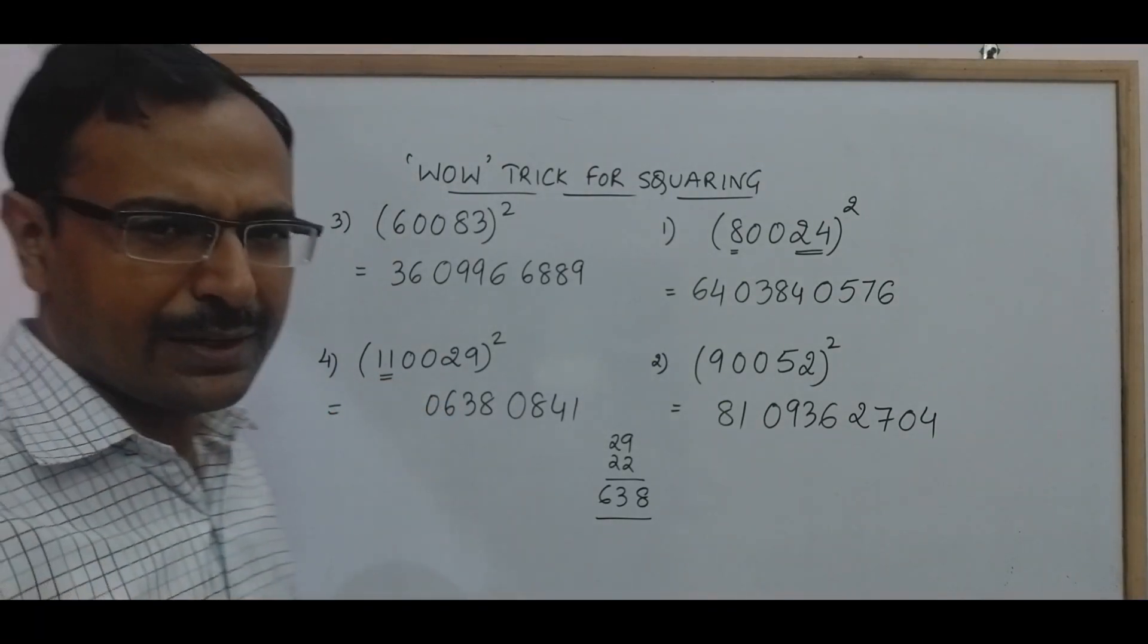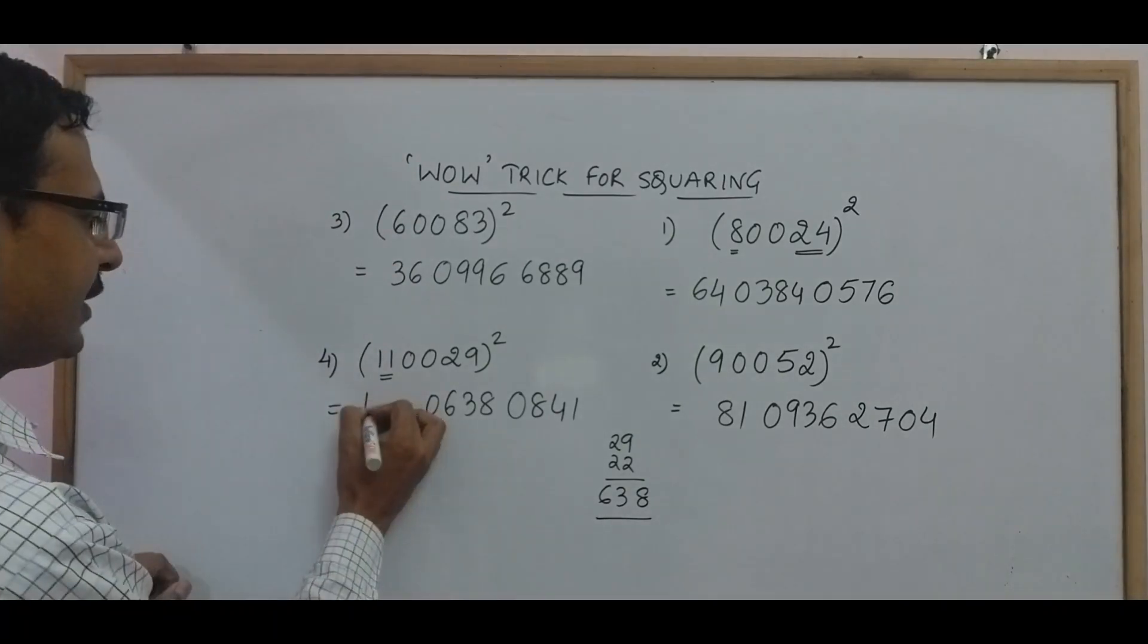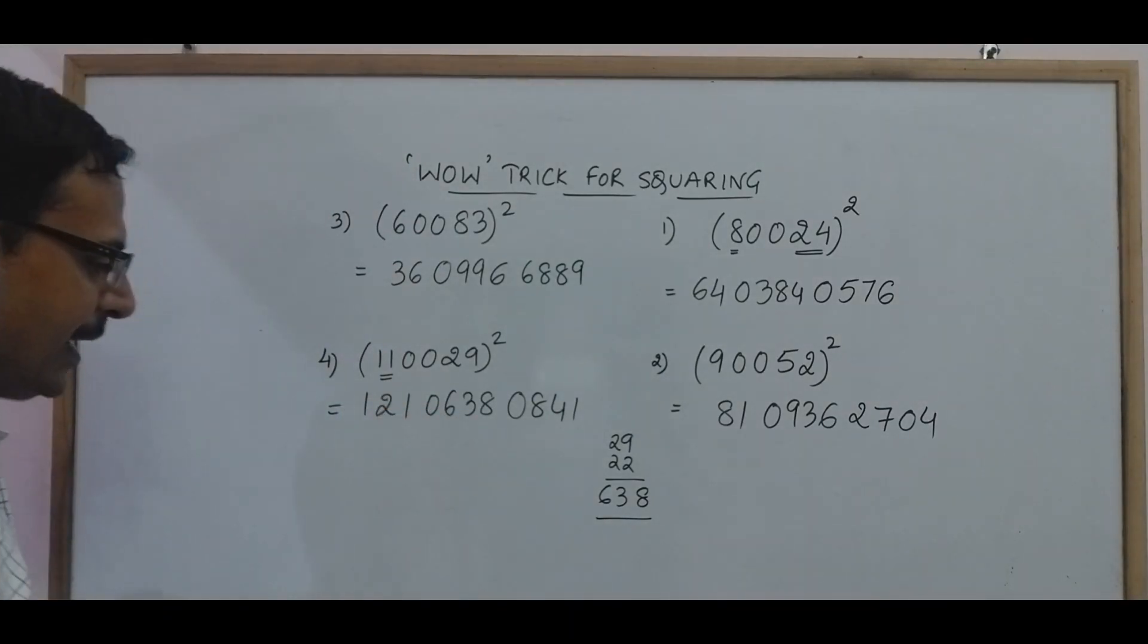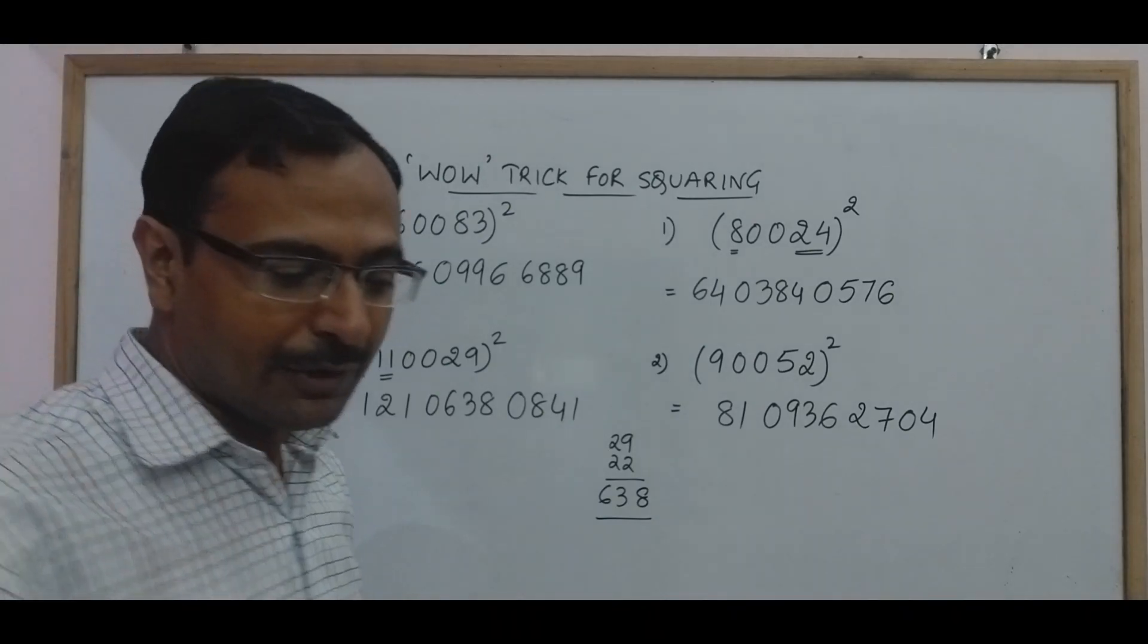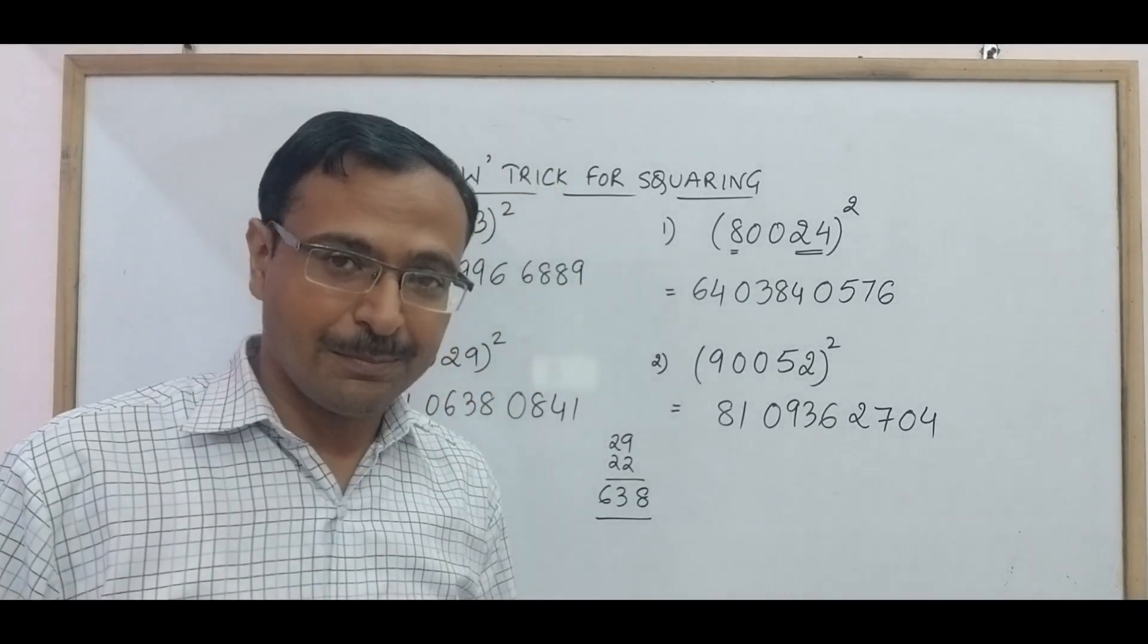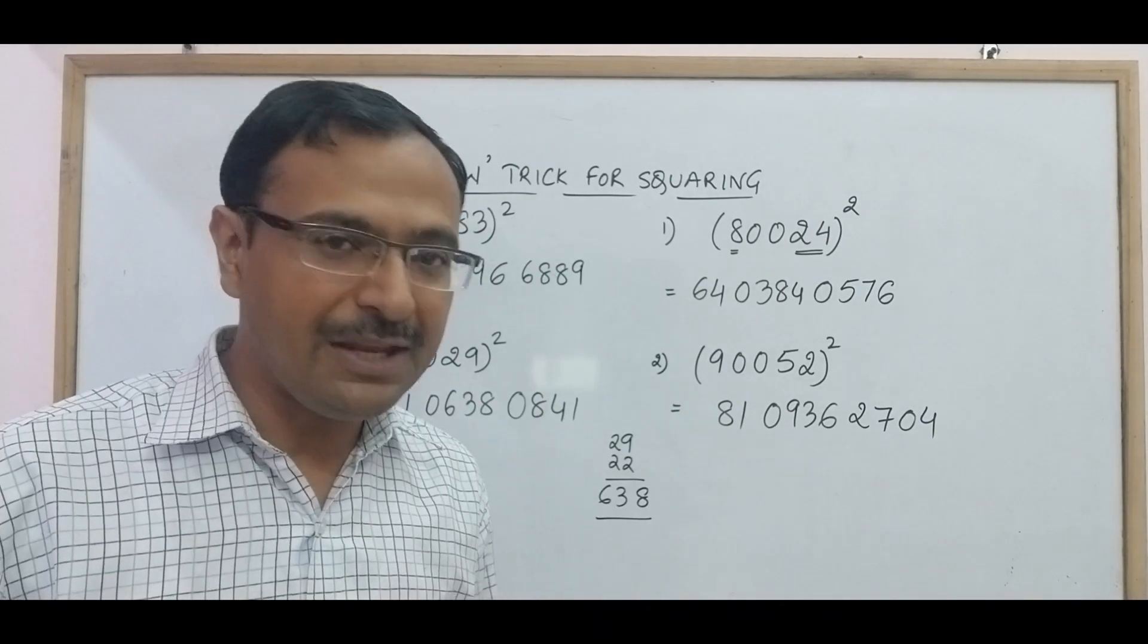And finally we have 11 number here, 11. So 11 square is very obvious, right? 121. So I will have a 121 here and that gives me the square of 110029 as 12106380841. A 10 digit calculator will not be able to do this, but you have it in your mind, right? You can do that orally very very easily.